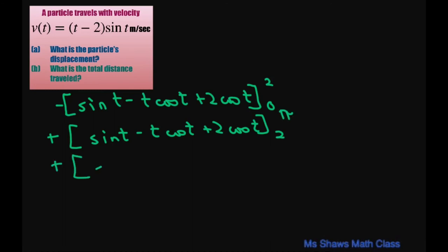And then do it again. Sine of t minus t cosine of t plus 2. Now this is negative 2. I'll just put the negative out front.